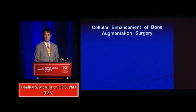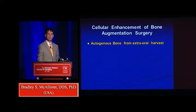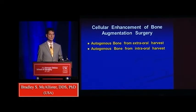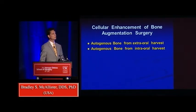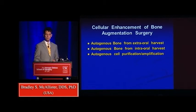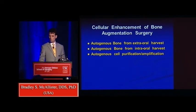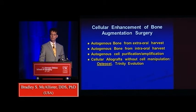Cellular enhancement of the bone augmentation surgery can be achieved in a variety of mechanisms. One would be autogenous bone from extra-oral harvest. Another would be intra-oral harvest, although there's a very limited amount of cellular contribution from intraoral augmentation — primarily you're going to get this if you're going to the tibia or the iliac crest. There has been a push towards autogenous cell purification and amplification, where one can harvest through bone marrow aspirates or iliac crest material and use the patient's own stem cells through this purification and amplification.